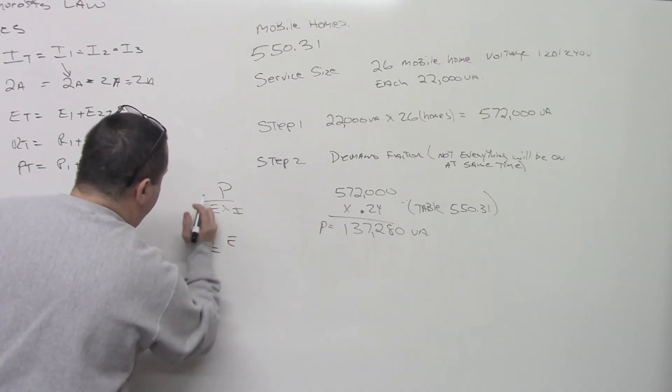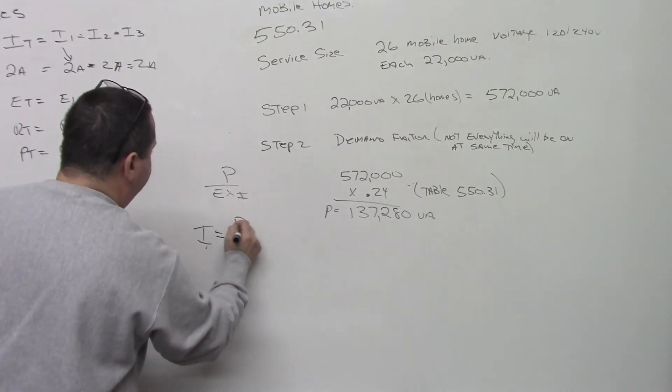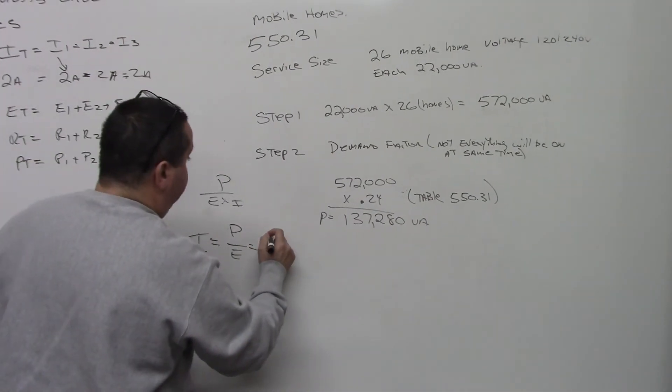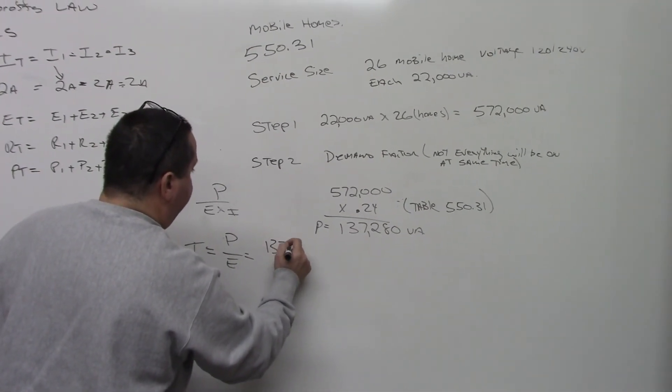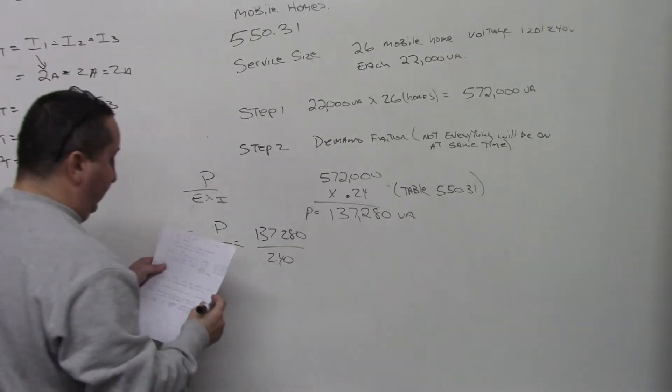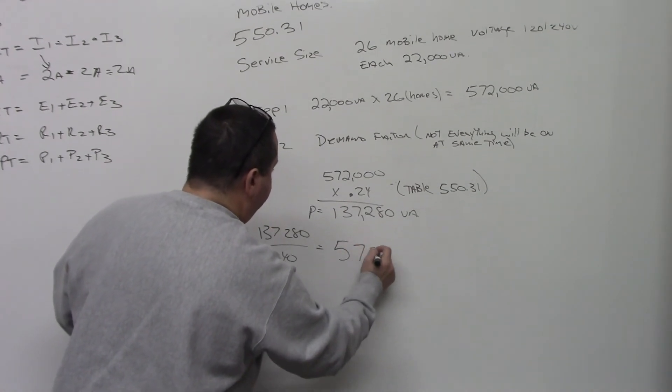So we're going to go, I equals P divided by E, which equals 137,280 divided by 240. And if you do this, you're going to come out with 572 amps.